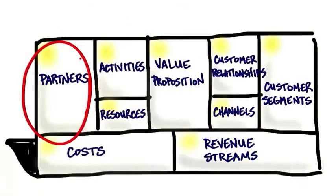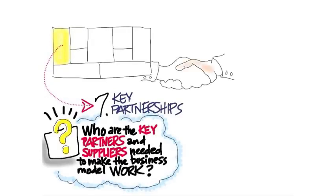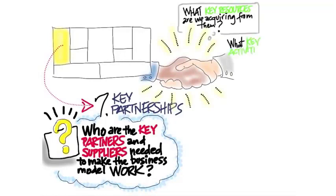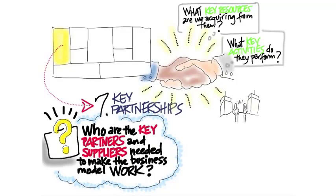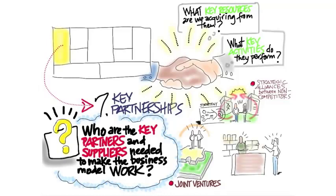The next piece is key partners and suppliers. We need to ask what exactly we're acquiring from partners, what activities they'll perform and when. Startups sometimes make the mistake of thinking they need partnerships on day one like large companies do. The types of partnerships you need in year one are certainly not the ones you'll need in year three, five, or ten. Partnerships could be strategic alliances, joint ventures, or regular supplier-buyer relationships — and you need to get out of the building and test them.